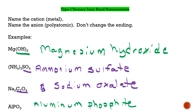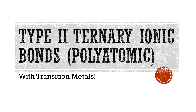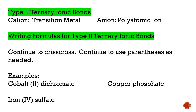Now I'm going to move on to Type 2 ternary ionic bonds — those use polyatomic ions with transition metals as your cations instead of representative metals. So let's talk about Type 2 ternary ionic bonds, where your cation (positively charged ion) is a transition metal, and your anion (negatively charged ion) is a polyatomic ion. We're going to continue to crisscross and continue to use parentheses as needed — not much has really changed.